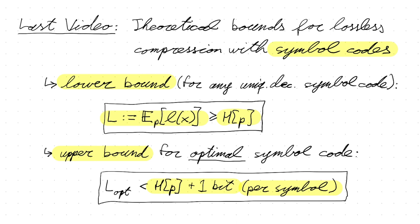If your message is very long and contains a lot of symbols, the overhead grows linearly in the number of symbols, but it can only be less than one bit per symbol if you choose an optimal symbol code. We proved this using a constructive proof — an algorithm that takes a probability distribution and constructs a symbol code. This method was called Shannon coding.